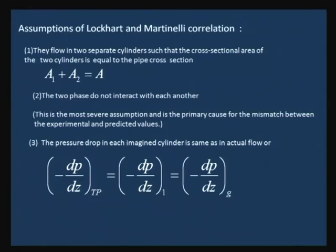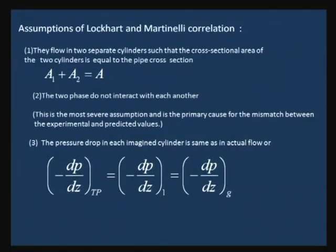Before we go to that, the correlation was based on certain assumptions which we had discussed in the last class. The first assumption is that both phases flow in two separate cylinders such that the cross-sectional area of the two cylinders equals the pipe cross section. Even for stratified flow we can assume they are more or less cylindrical, but for annular flow the liquid film cannot be assumed to flow in a cylinder, so a shape factor has to be accounted for.